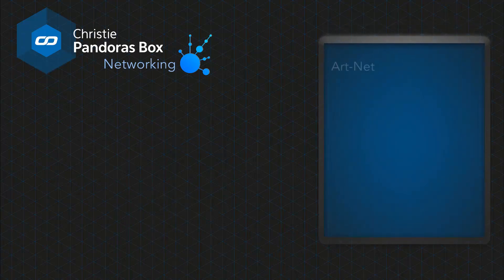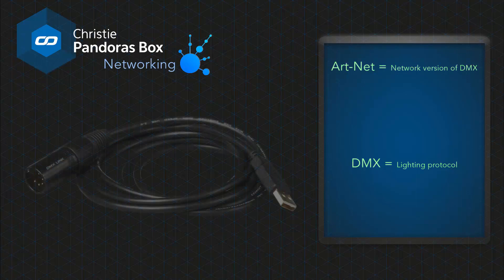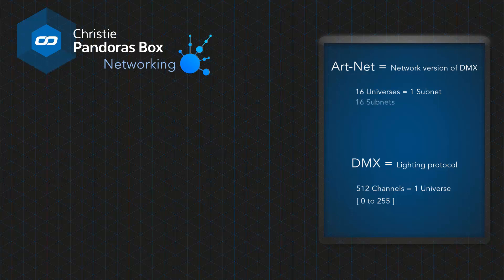One of the protocols that Pandora's Box supports is ArtNet. ArtNet is the network version of a protocol called DMX, which is used to control show equipment like dimmers, intelligent lights, moving heads, and effects. You can also use DMX to control Pandora's Box using a USB adapter or ArtNet via the network. DMX transports 512 values called channels, each with a value range from 0 to 255. One set of 512 values is called a universe. ArtNet allows you to use 16 universes, each called a subnet, and ArtNet can transport 16 subnets.